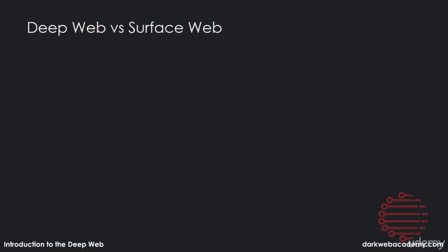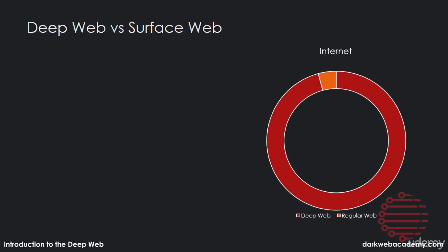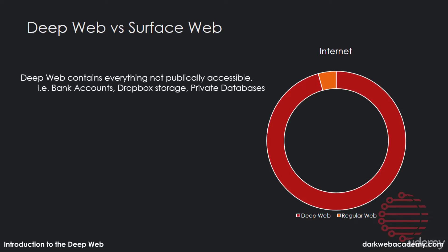To start off, we'll compare the deep web to the surface web. Compared to the whole of the internet, the deep web consists of over 95% of all the data out there. The deep web is everything that's not publicly accessible — things like bank accounts, your Dropbox storage, private databases, your email, your Facebook messages — anything that you can't just access with a Google link. You have to have special permissions.